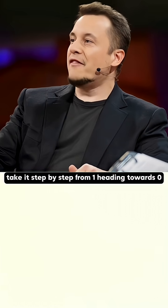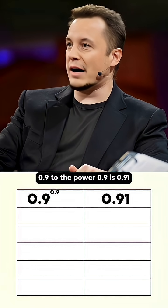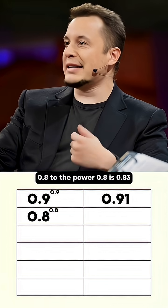Now let's take it step by step. From 1 heading towards 0, 0.9 to the power 0.9 is 0.91. 0.8 to the power 0.8 is 0.83.